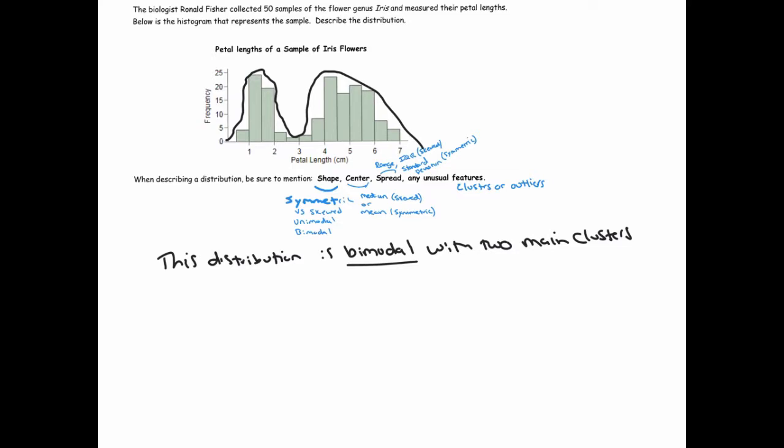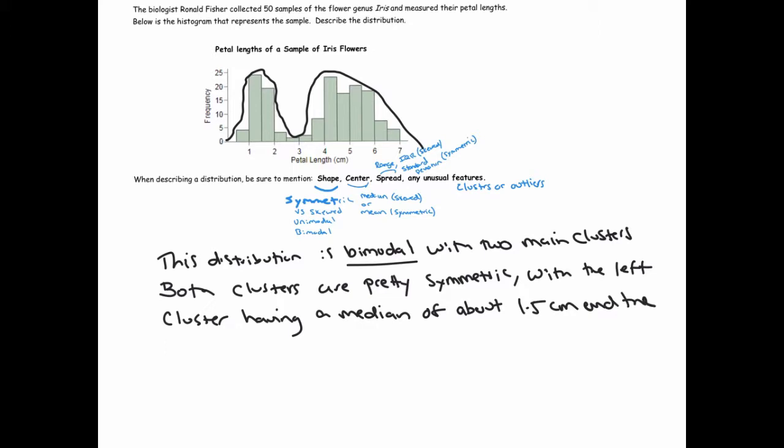Now I want to talk about these clusters individually. The left cluster and the right look pretty symmetric, so both clusters are pretty symmetric. Let's talk about their centers. The left cluster has a center of around 1.5 centimeters. I'm going to say median because we can't get the mean - we don't have the individual data points. The left cluster has a median of about 1.5 centimeters and the right has a median of around about 5 centimeters.